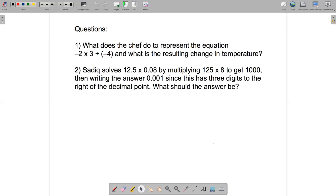So that brings us to the questions. So first question is going back to the chef story for multiplying integers. Let's think about this equation: -2 x 3 + (-4). Okay, so what is the chef doing to represent this equation, -2 x 3 + (-4), and then what is the resulting change in the temperature? Okay, so that's question one.